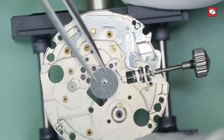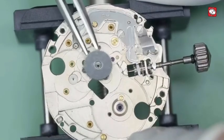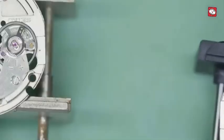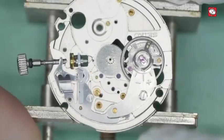And here is the broken wheel. Now I have a scrap 7S26 here.